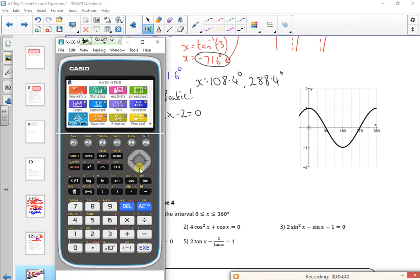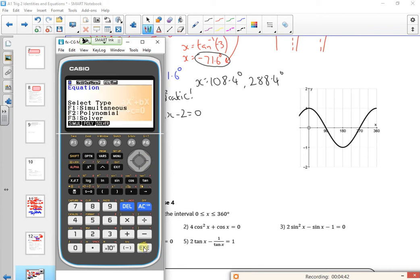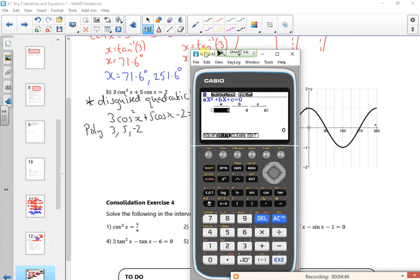So menu, down to equation, poly, degree 2. I forgot what numbers I'm putting in. So 3, 5, minus 2. Gives me a third, so I get a third out, or I get minus 2 out.